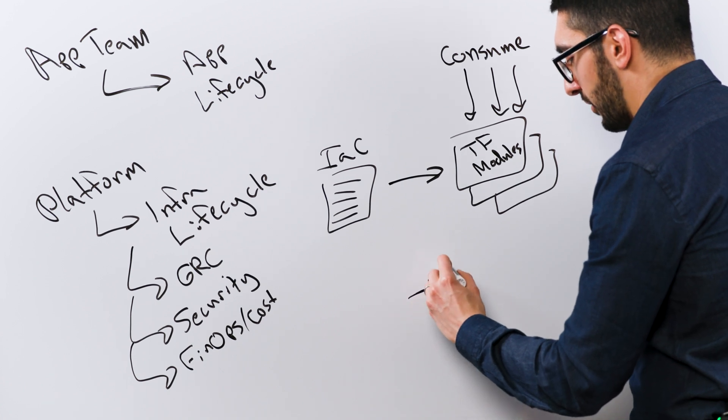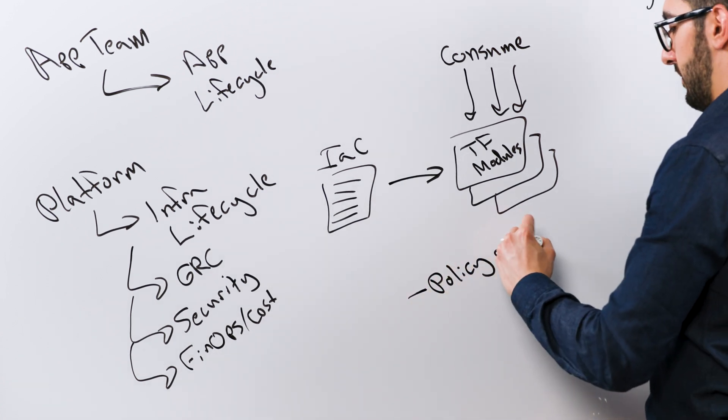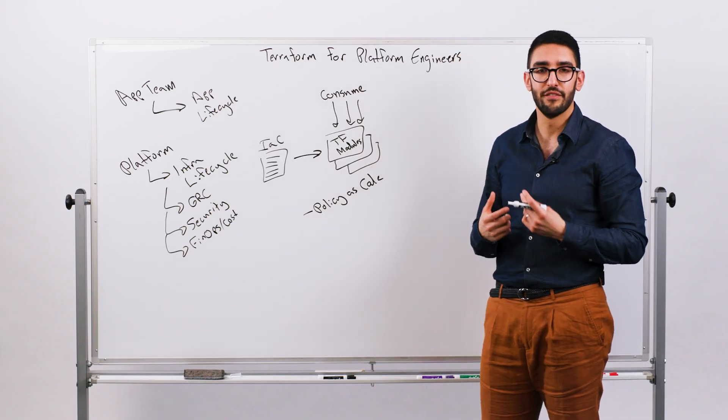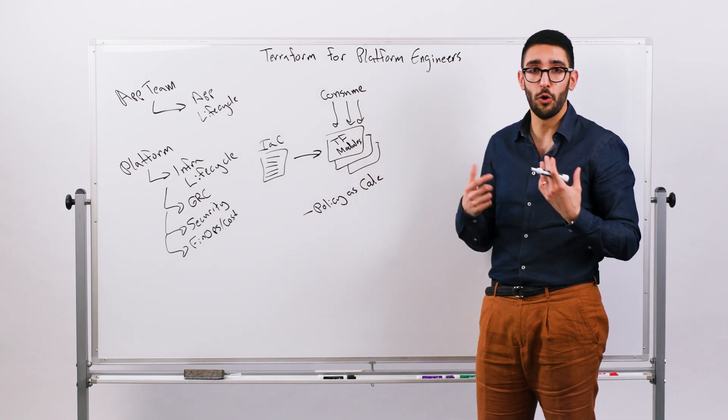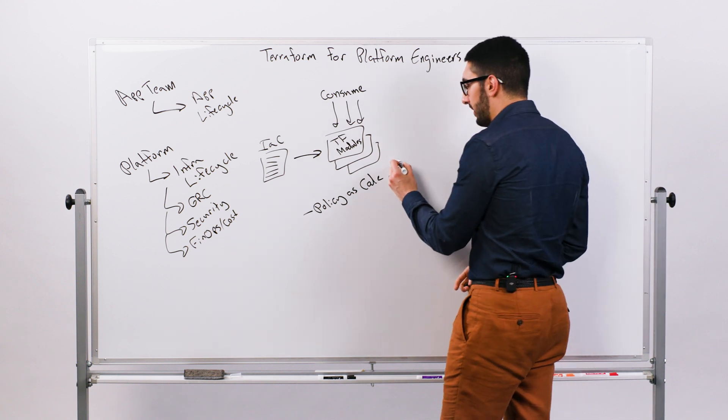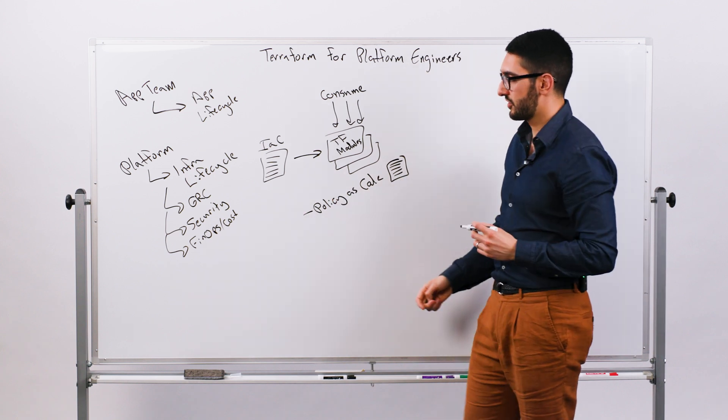So this is where things like policy as code come in. So whether you're using Sentinel, which is a HashiCorp policy language to define various controls, or you're using something like Open Policy Agent, OPA, or Rego, you can define policy as code, and those policies can span different kinds of constraints.